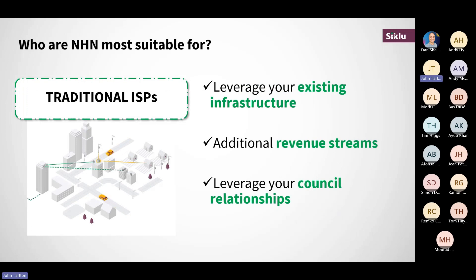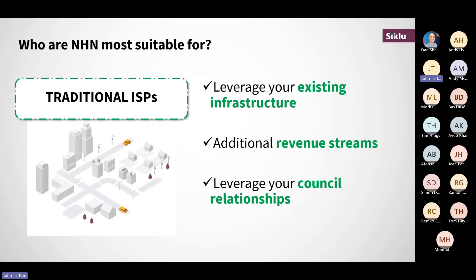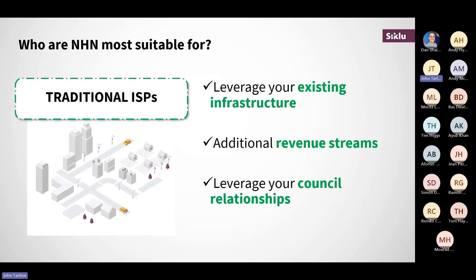Not just smart cities — building a neutral host network is also fantastic for traditional ISPs. Those ISPs that already have a network infrastructure, I would urge you to consider building these redundant networks with TerraGraph, as you are already 80% there. You are simply extending your network reach cost-effectively by activating the street assets to connect up operators' small cell technology. This allows you to leverage existing relationships with councils who have targets to improve mobile coverage and address the digital divide, while also bringing additional revenue streams.